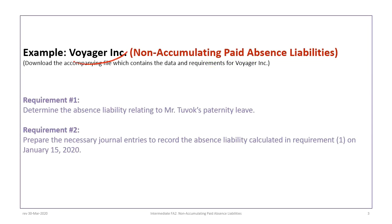This tutorial is based on the Voyager Inc example, so please make sure that you download the correct file and have pre-read the information so that you're ready to follow along. This problem has two basic requirements: the first is to determine the absence liability relating to Mr. Tuvok's paternity leave, and the second is to prepare any necessary journal entries to record that absence liability on January 15th, 2020.